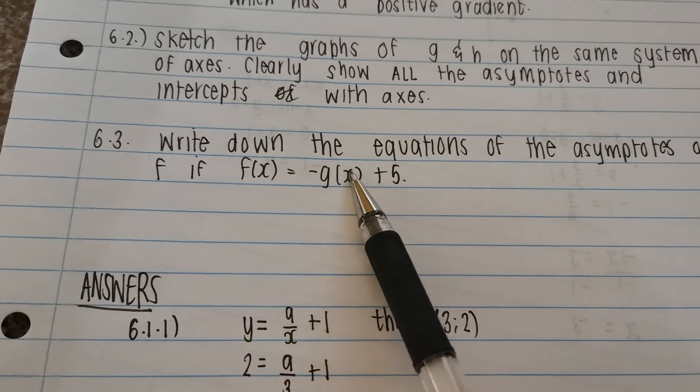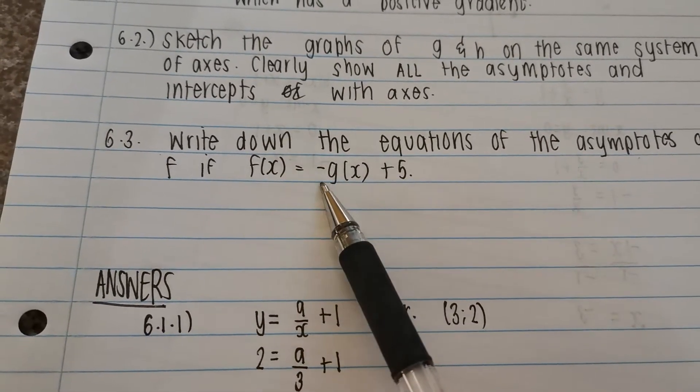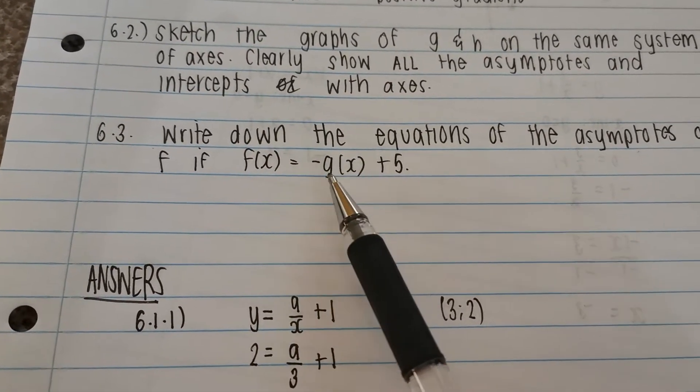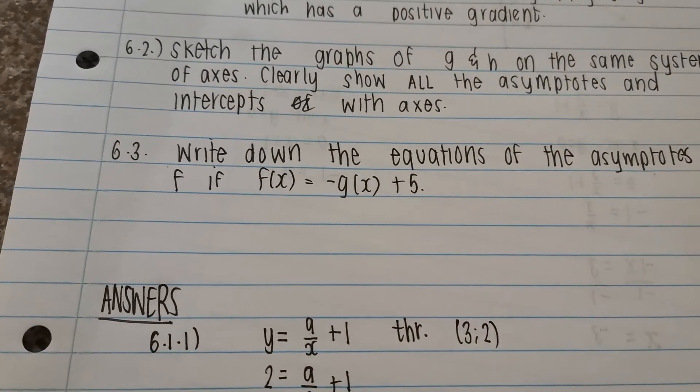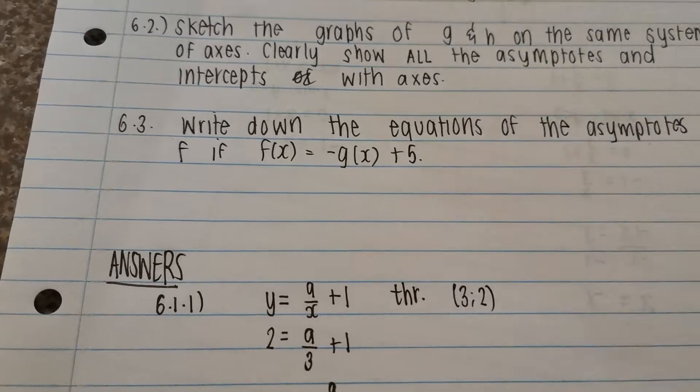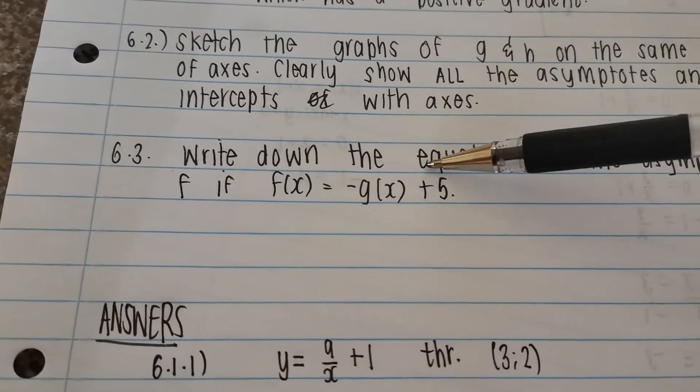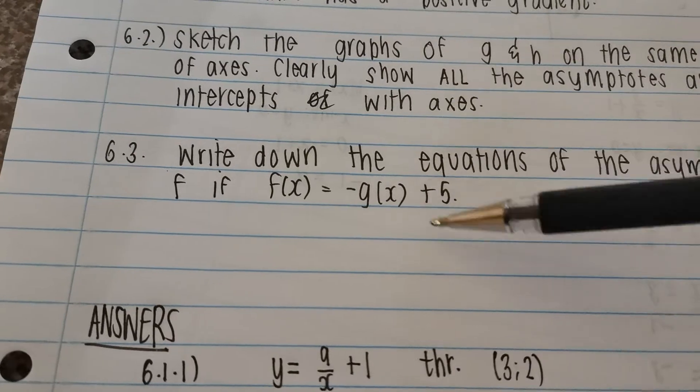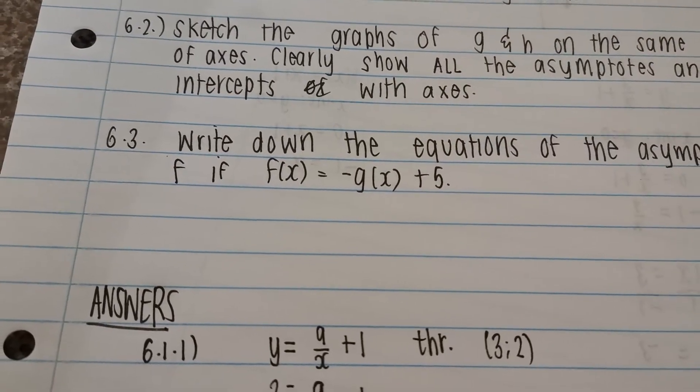If f of x is equal to negative g of x, when we have a negative in front of something, what does it mean? I discussed this in a previous video. It is when we are reflecting it along the x-axis, right? And then after you reflected it, we are shifting it 5 units up.